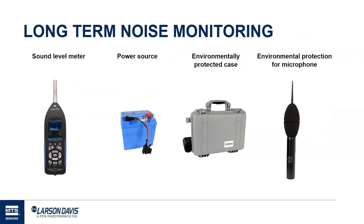The main components of long-term measurement can be determined once you get the scope of your project worked out. The most important element is the sound level meter — which one you choose depends on what you are measuring and what you need out of it. Second is the power source. Third is an environmentally protected case, which deters theft, protects from the elements, and makes for easy relocation of all your components. And then you will need to protect the microphone from wind and rain. To learn more about microphone protection, you can watch our previous webinar, Five Pitfalls of Noise Monitoring, featuring Ken Cox, our product manager. That video is on our YouTube channel.